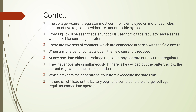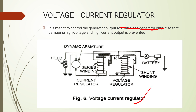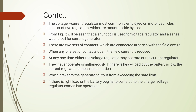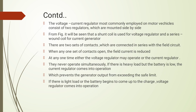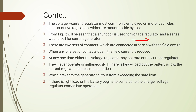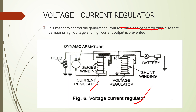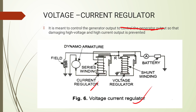The voltage and current regulators are mounted side by side as shown in the figure. There is a shunt coil — the shunt coil is the voltage regulator, and a series wound coil is the current regulator. There are two sets of contacts connected in series with the field circuit.